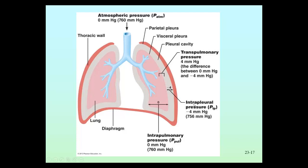Then there's another pressure called intrapleural pressure — also called pleural pressure. Your textbook calls it intrapleural pressure; other textbooks call it pleural pressure. The key thing is that you understand it's the pressure that occurs in the pleural space, which is the space between the parietal pleura that lines the body cavity around the lungs, and the visceral pleura, which covers the lungs. There are two membranes back-to-back, and they're filled with fluid called pleural fluid that fills that space.